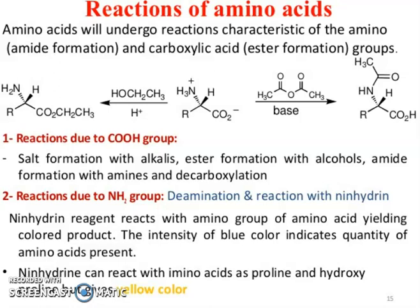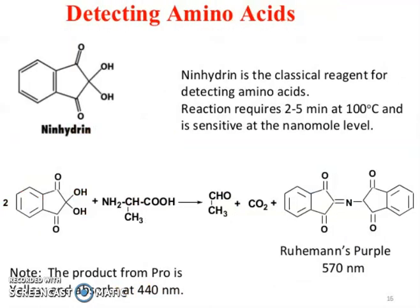Ninhydrin reagent reacts with amino groups of amino acids yielding a color product. The intensity of the blue color indicates the quantity of amino acid present. Ninhydrin can react with amino acids such as proline and hydroxyproline but gives a yellow color. Ninhydrin is the classical reagent for detecting amino acids. The reaction requires 5 minutes at 100°C and is sensitive at the nanomole level. The product absorbs at 570 nm (purple), while the product from proline gives yellow color and absorbs at 450 nm.